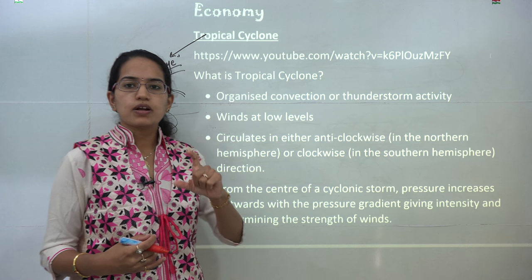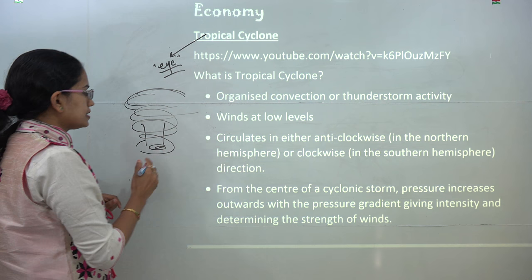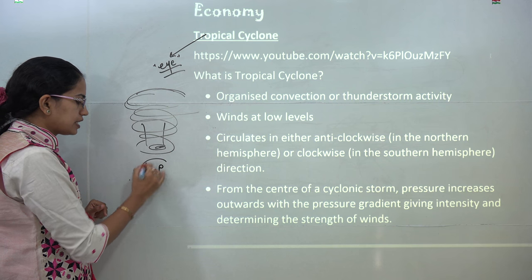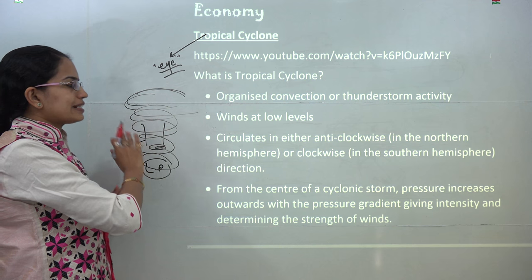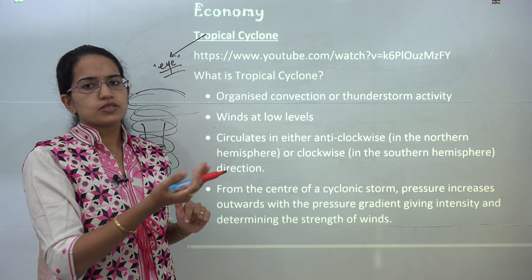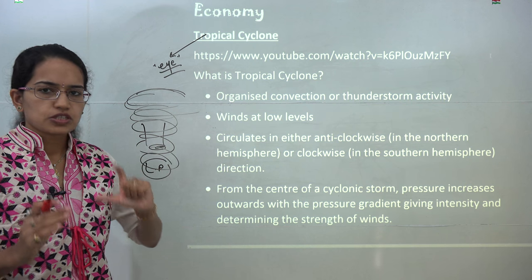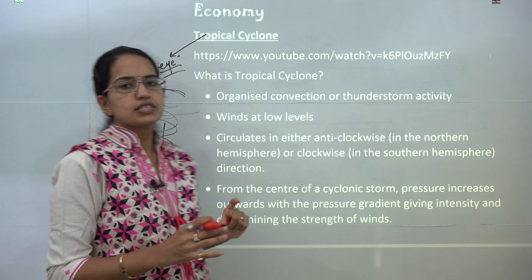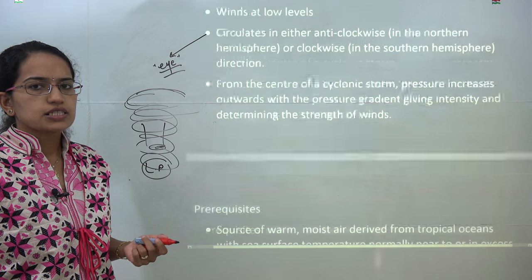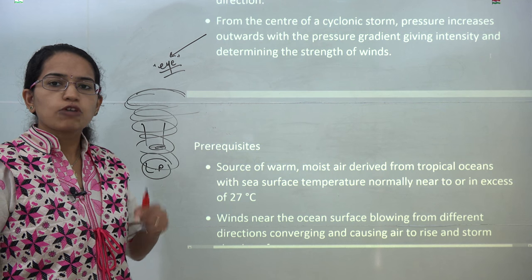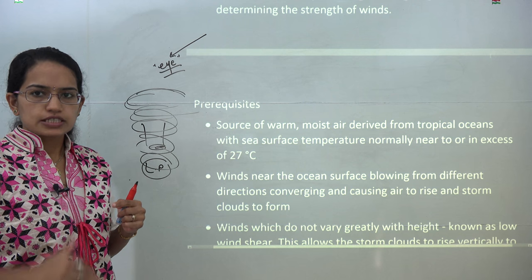This topic was one of the major articles from The Hindu. A tropical cyclone is basically a low pressure area where wind circulates — anti-clockwise in the northern hemisphere and clockwise in the southern hemisphere. Some preconditions required for formation include a warm moist air source with a temperature of around 27 degrees Celsius, formation of strong clouds due to low wind shear, and the Coriolis force which accentuates the transition process.